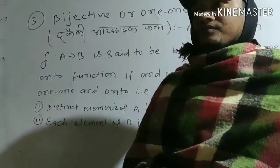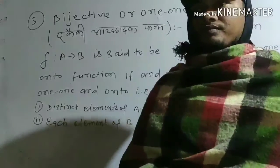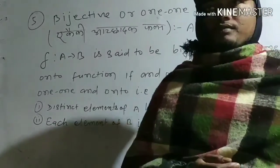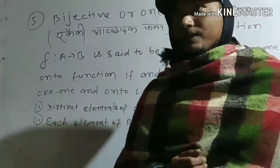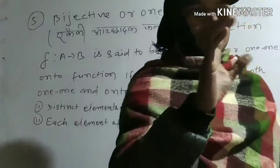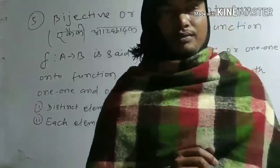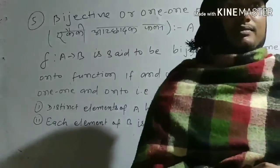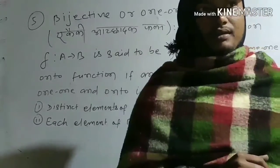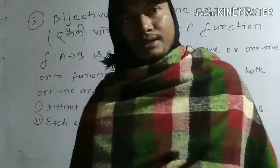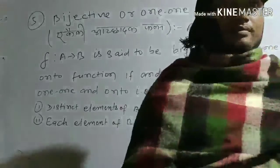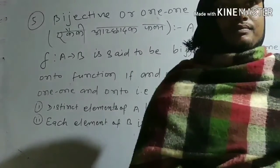We say bijective is one-one and onto. What function do you call one-one and onto?